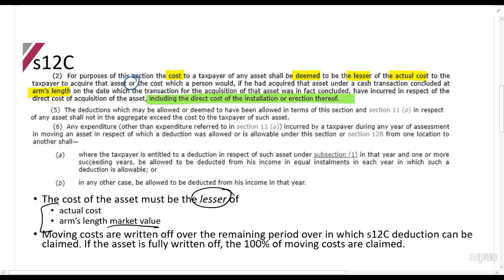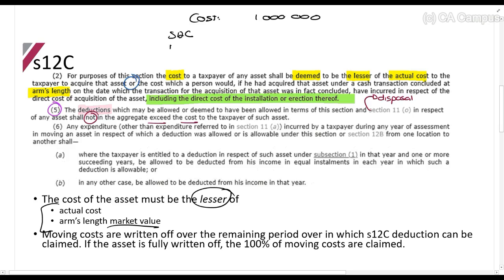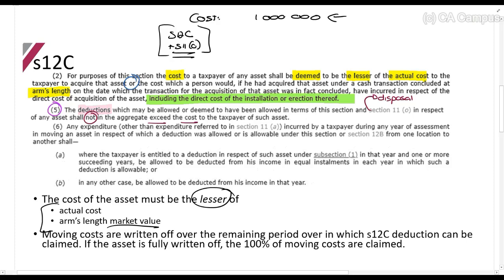Also note that the cost includes the direct cost of installation or erection. Section 12C(5) states that the total deductions allowed under Section 12C and Section 11O — which covers scrapping losses on disposal — shall not exceed the cost of the asset. So if the asset cost one million rands, your total Section 12C allowances plus any Section 11O allowance cannot exceed one million rands.